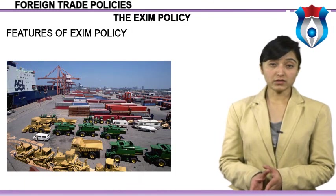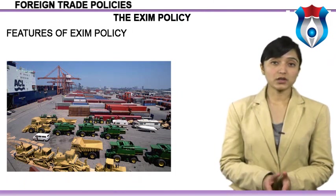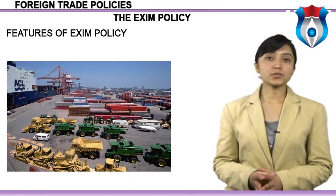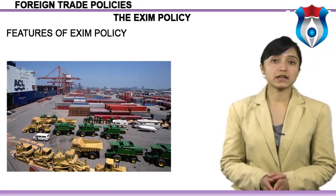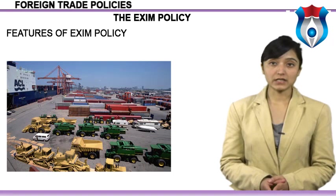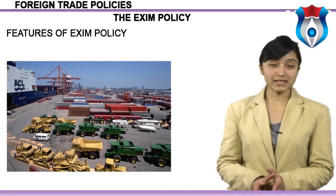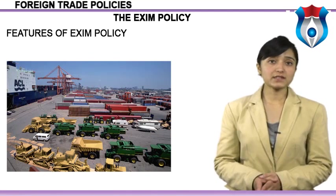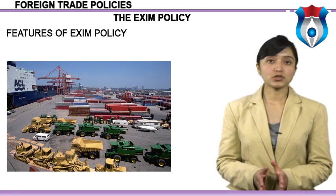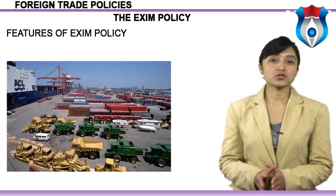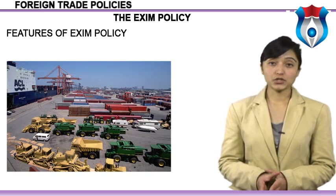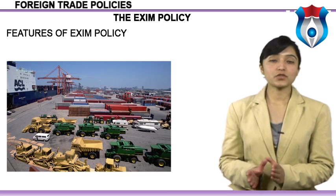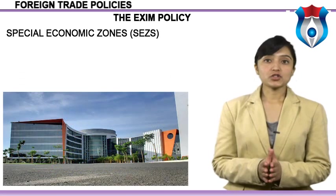Features of Exim policy: Union Commerce and Industry Minister announced the Exim policy for the five-year period 2002-2007 on March 31, 2002. The main thrust of the policy is to push India's exports aggressively by undertaking several measures aimed at augmenting exports of farm goods, small-scale sector, textiles, gems and jewelry, electronic hardware, etc. Besides these, the policy aims to reduce transaction costs to trade through a number of measures to bring about procedural simplifications. In addition, the Exim policy removes quantitative restrictions on exports except for a few sensitive items.